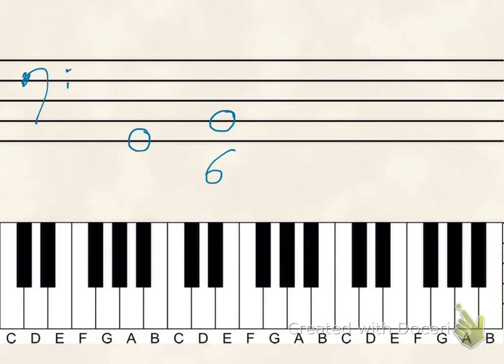And second inversion, 5th in the bass, the bass note with a 6-4. And those are your figures for different inversions of triads in figured bass.